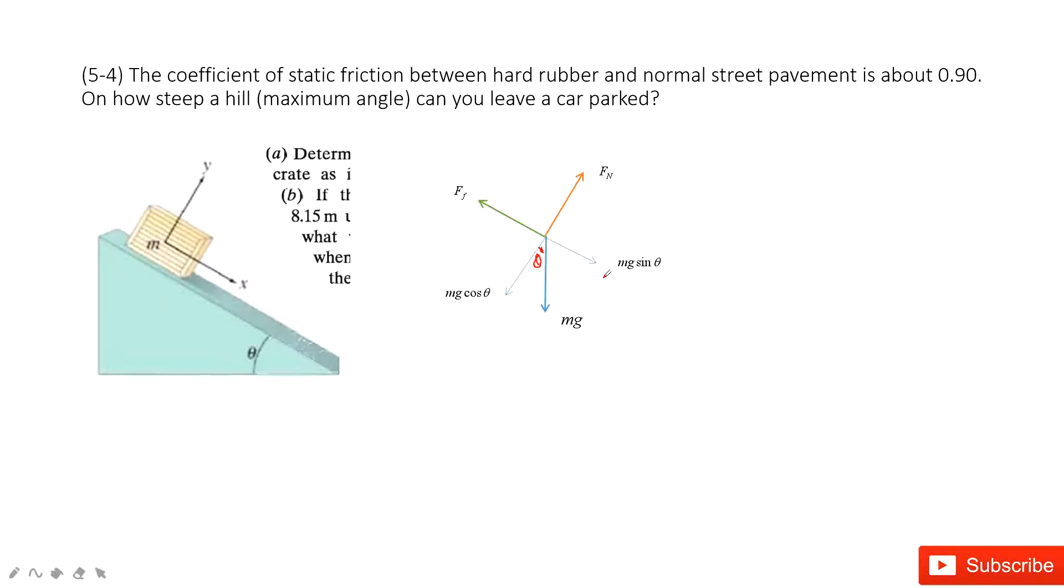Now the next thing we need to write equations using Newton's second law. Because the car is stationary, the acceleration is zero. So we can write the net force in y-component is F_N minus mg cos theta equals zero, and in the x-component, mg sin theta minus the friction equals zero.